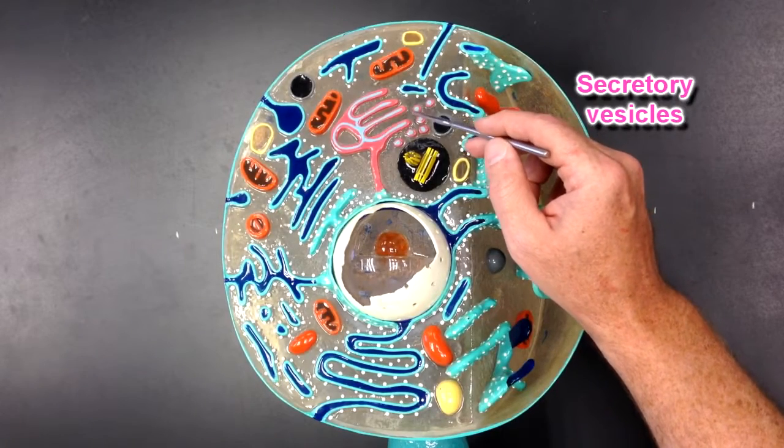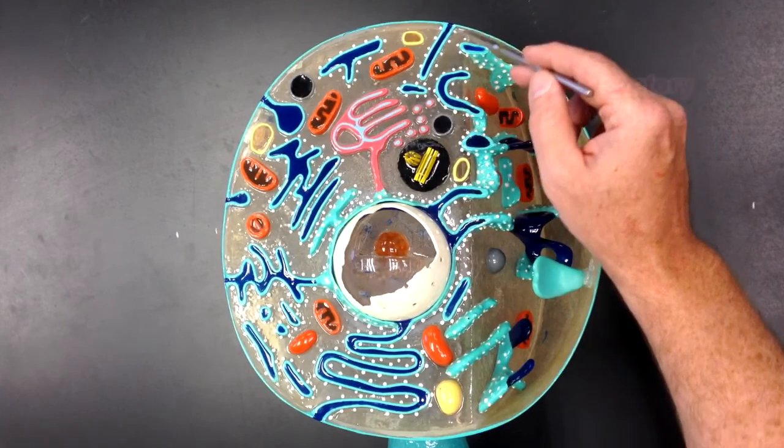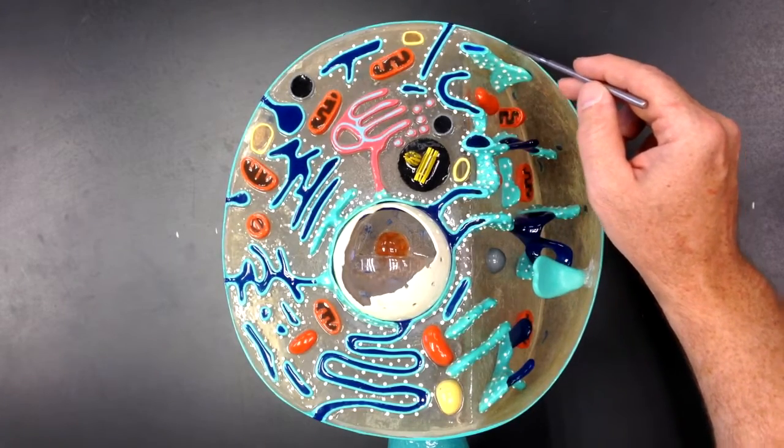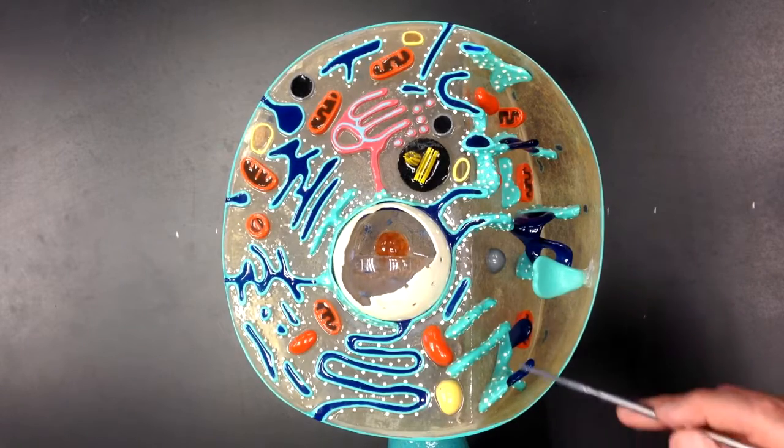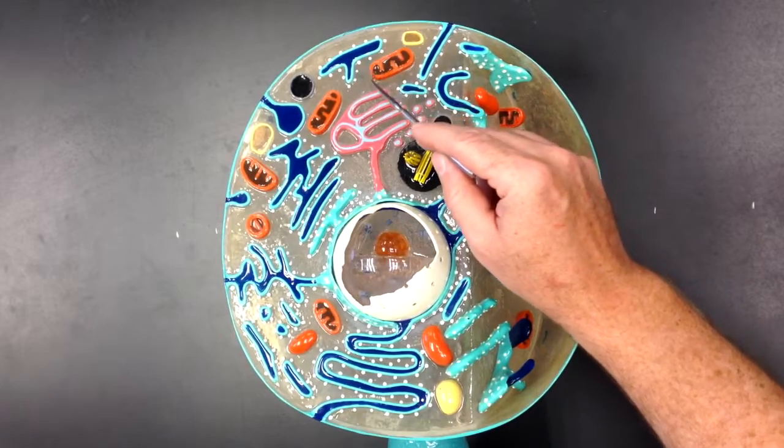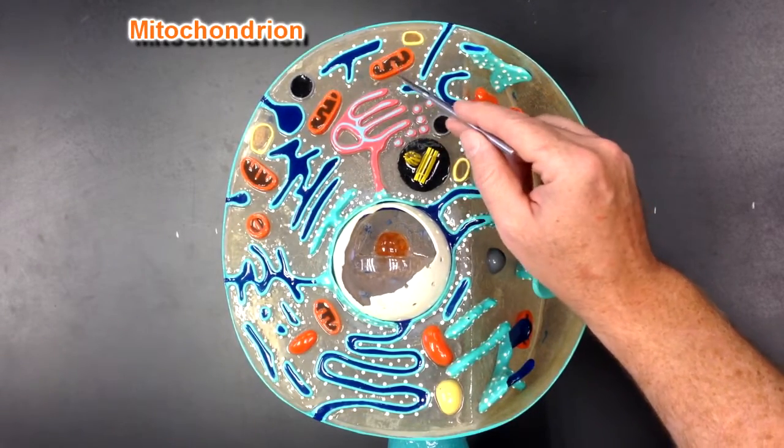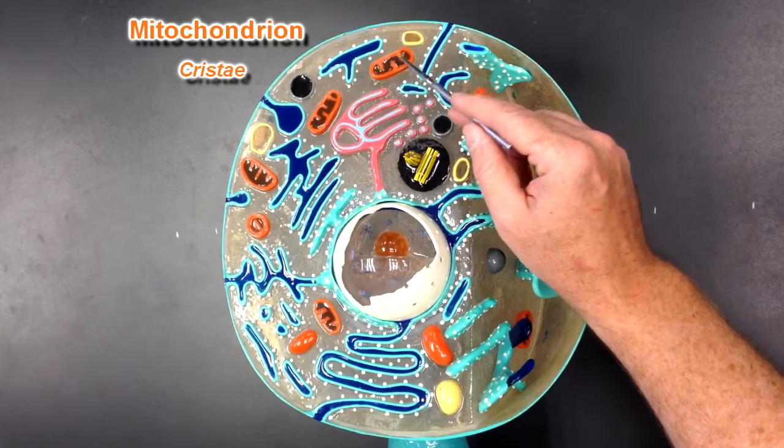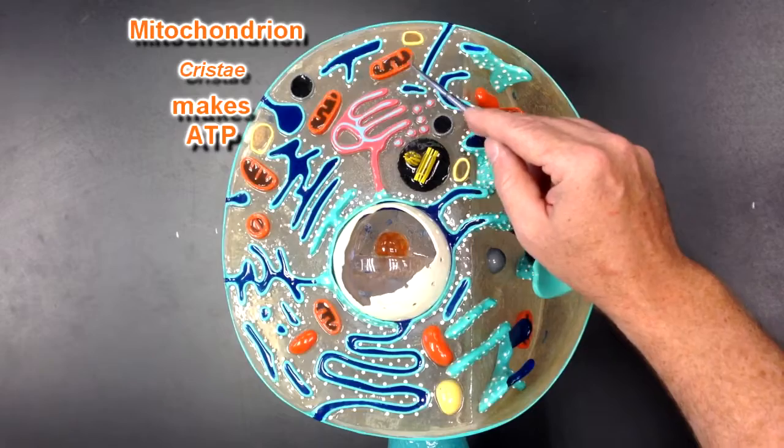Also these are membrane bound so that membrane can be incorporated in the cell membrane to repair and replace parts of the cell membrane that need replacement. This right here is a mitochondrion and you can see the cristae inside the mitochondrion. This structure is responsible for producing ATP.